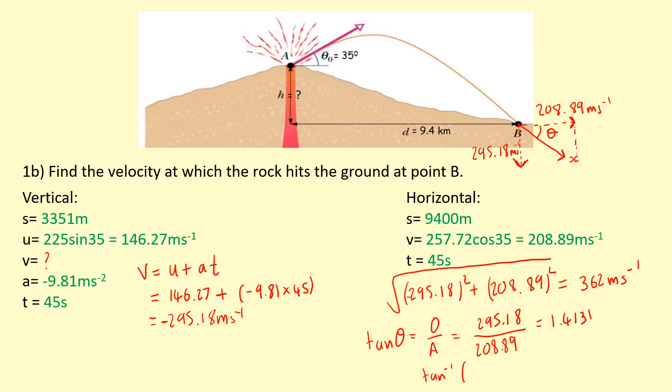If you take the inverse of that, you get an angle of 54.7 degrees, and this is below the horizontal. You have to mention that this is 54.7 degrees below the horizontal. That's the direction.